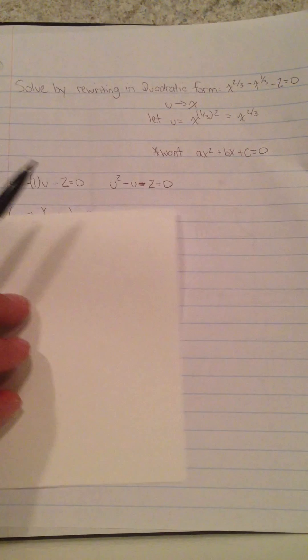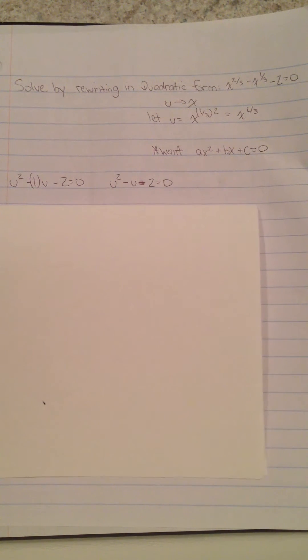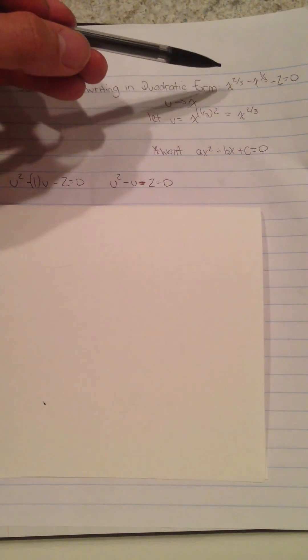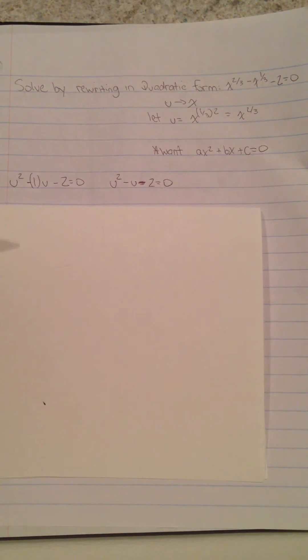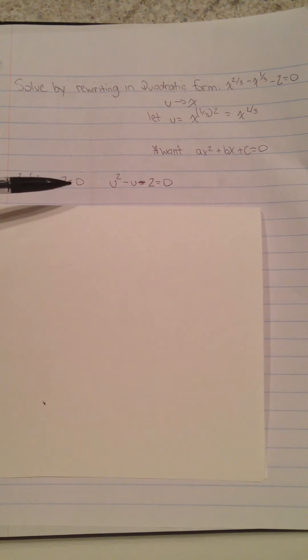Now what we can do is bring u here, raise it to two to get x^(2/3), minus u times one to get x^(1/3), and then minus two, which we have here: u² - u - 2.